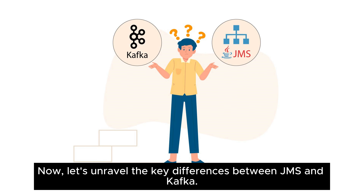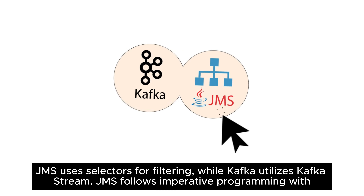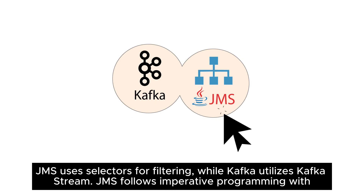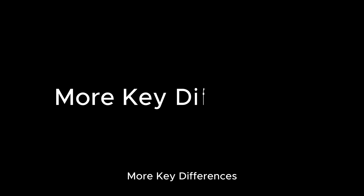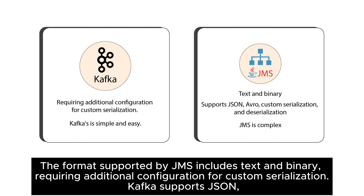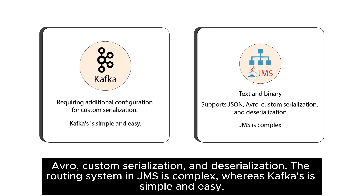Now let's unravel the key differences between JMS and Kafka. JMS uses selectors for filtering, while Kafka utilizes Kafka Streams. JMS follows imperative programming with both asynchronous and synchronous operations, whereas Kafka adopts reactive programming with an asynchronous, data-driven architecture. The format supported by JMS includes text and binary, requiring additional configuration for custom serialization, while Kafka supports JSON, Avro, and custom serialization and deserialization. The routing system in JMS is complex, whereas Kafka's is simple and easy.